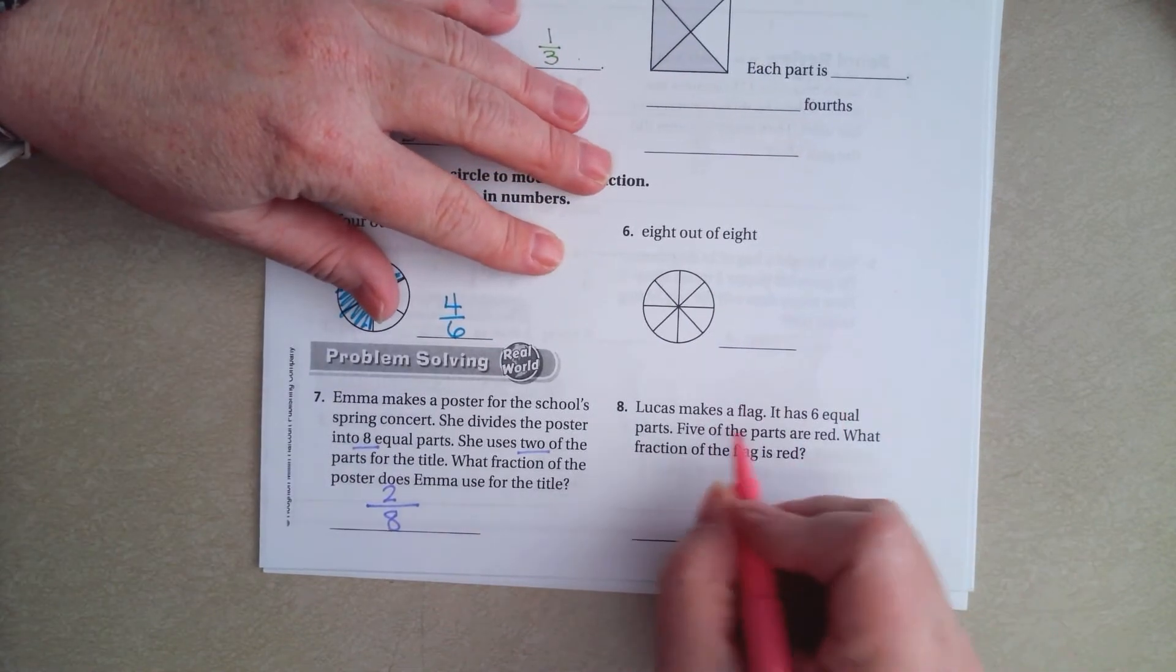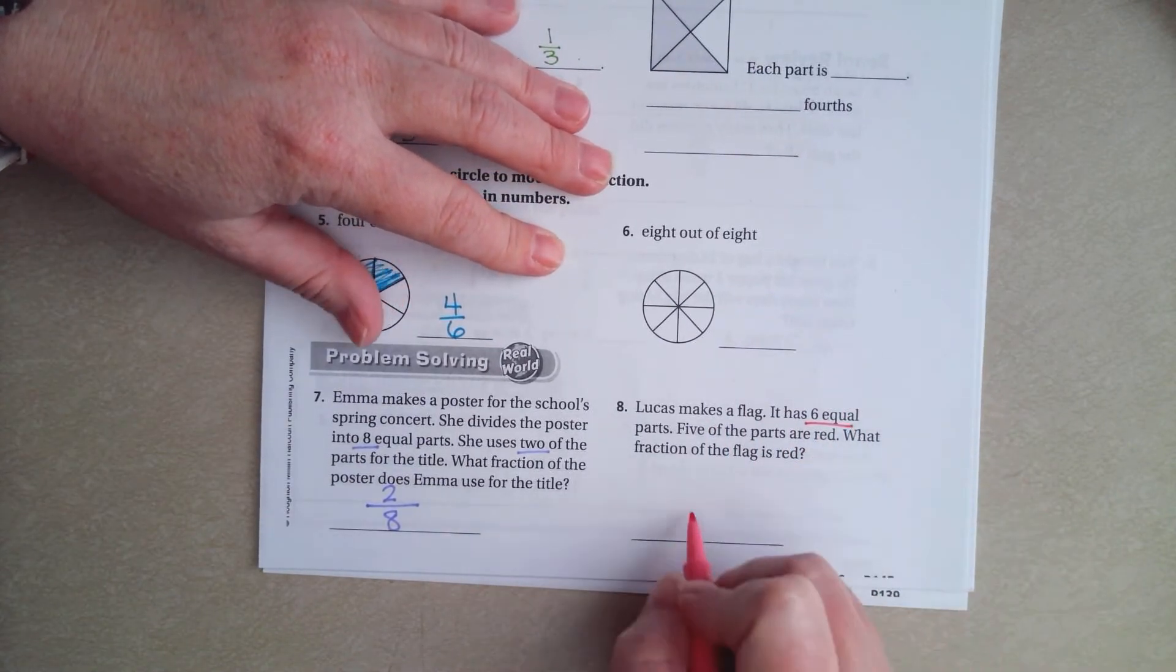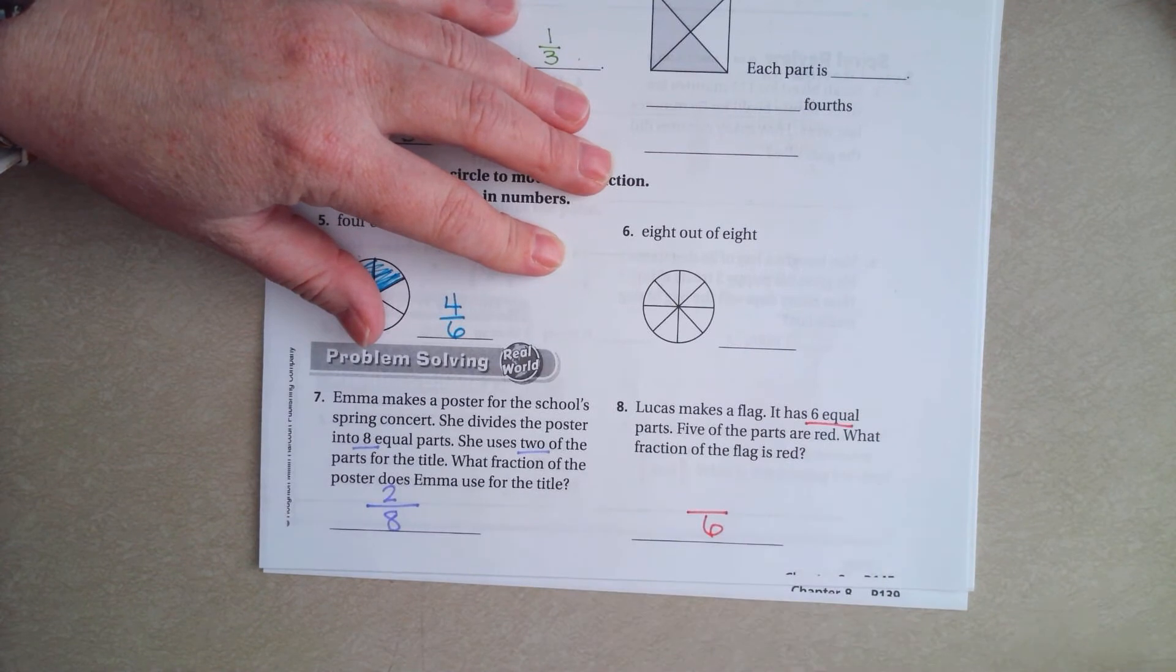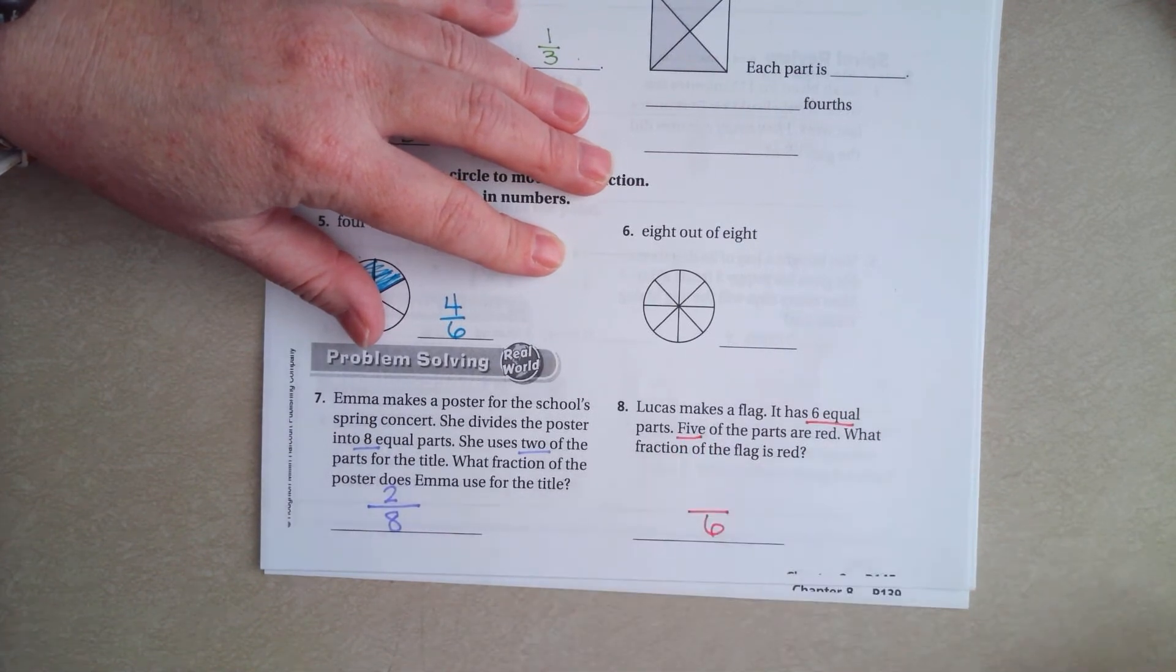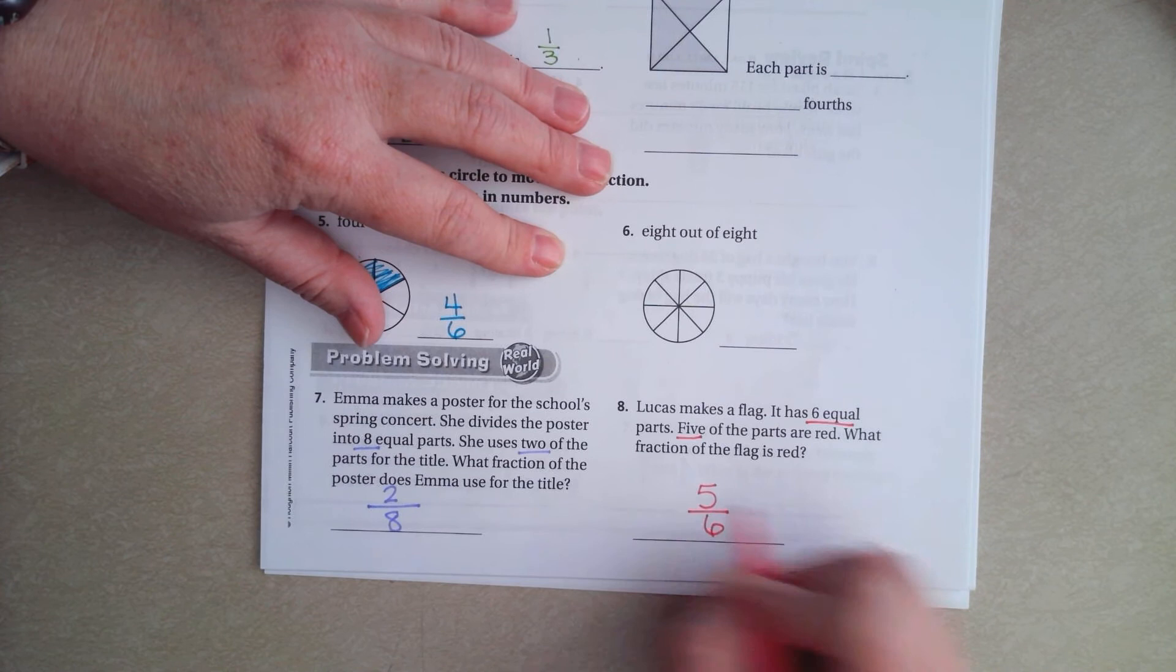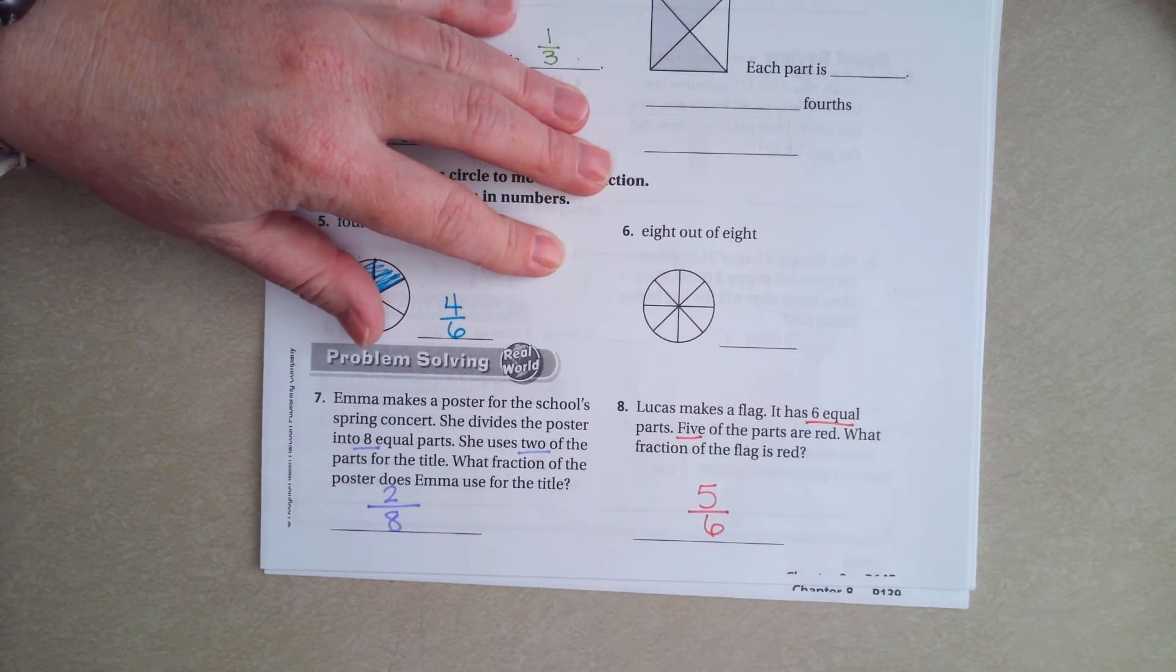Lucas makes a flag. He has 6 equal parts. That makes our denominator 6. 5 of those parts are red. What part is red? 5. Done.